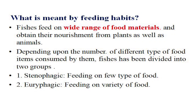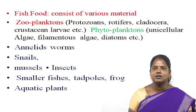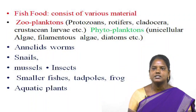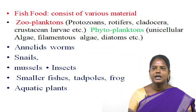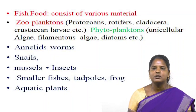What is meant by fish food? Fish food consists of various materials: zooplankton — meaning protozoans, rotifers, cladocera, crustacean larvae, etc.; phytoplankton — meaning unicellular algae, filamentous algae, diatoms, etc.; next, annelid worms; then snails, mussels, insects, smaller fishes, tadpole larvae, frogs, and aquatic plants.